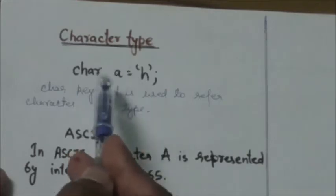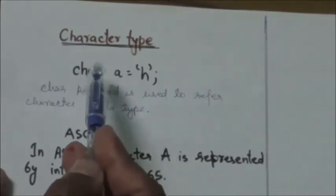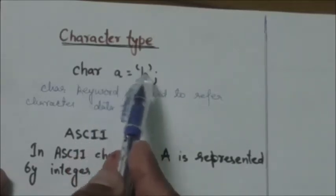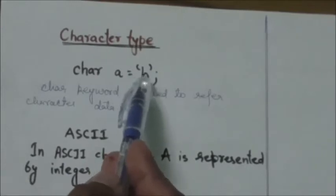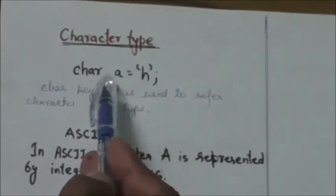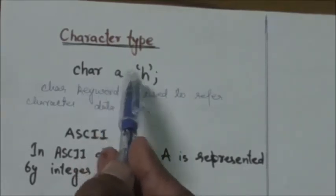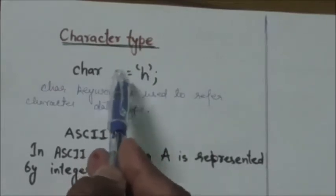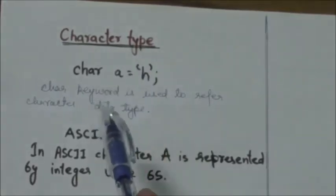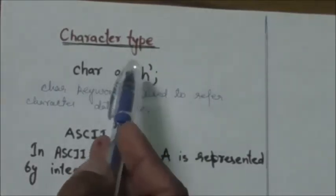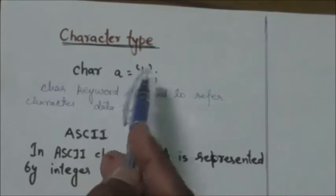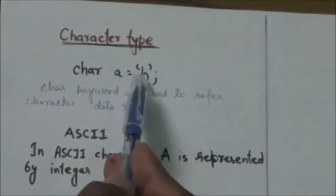As I mentioned, character data type allows a variable to store only one character. So this variable can store only one character. Here you can see the character small 'h' — it is assigned to this character type variable A. So the value of this character type variable A is the character small 'h'. Now, to initialize a character variable with a character literal, as we have done here, the character must be surrounded with single quotation marks.